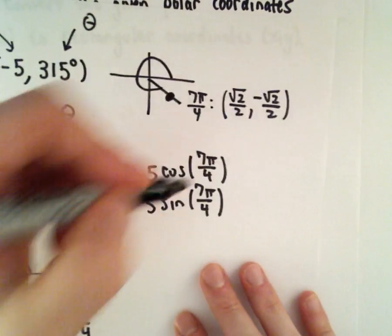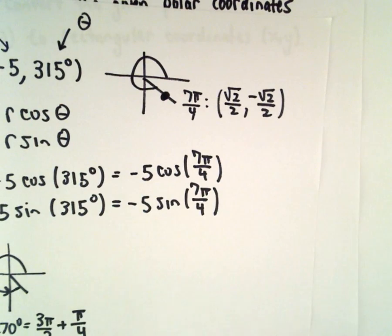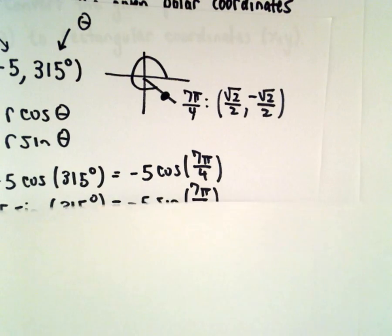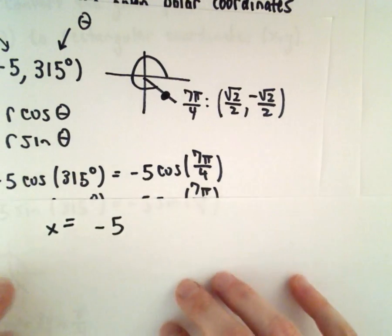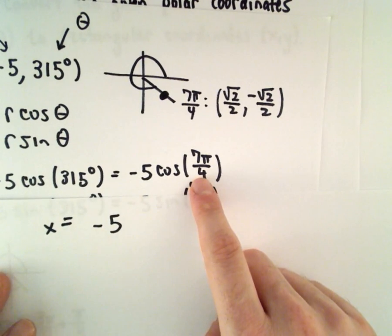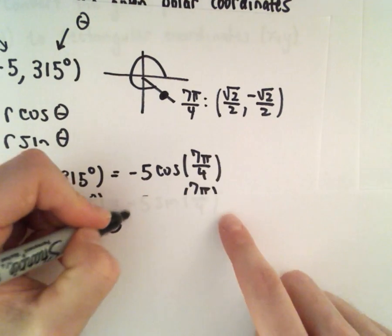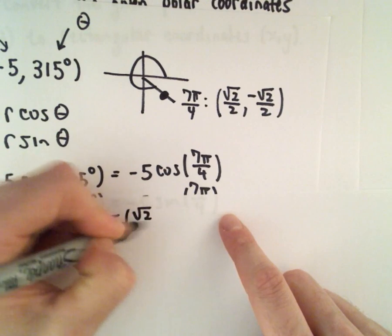So let's see here. We'll have, let me get another piece of paper. So for cosine, or for the x coordinate, we'll have negative 5 multiplied by cosine of 7 pi over 4. 7 pi over 4 will be the square root of 2 over 2. There's really not a lot of simplification you can do there, so I'm just going to leave it negative 5 times root 2 over 2.